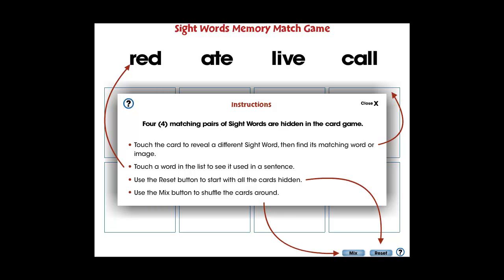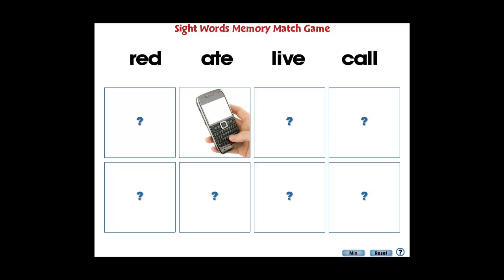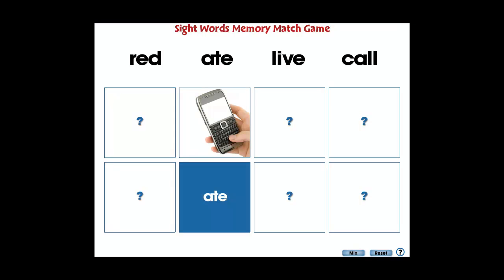In this memory match game, four matching pairs of Dolch sight words and their images are hidden in the puzzle. For elementary school, this app is great for comprehending the Dolch sight words covered in the topic of high-frequency sight words.